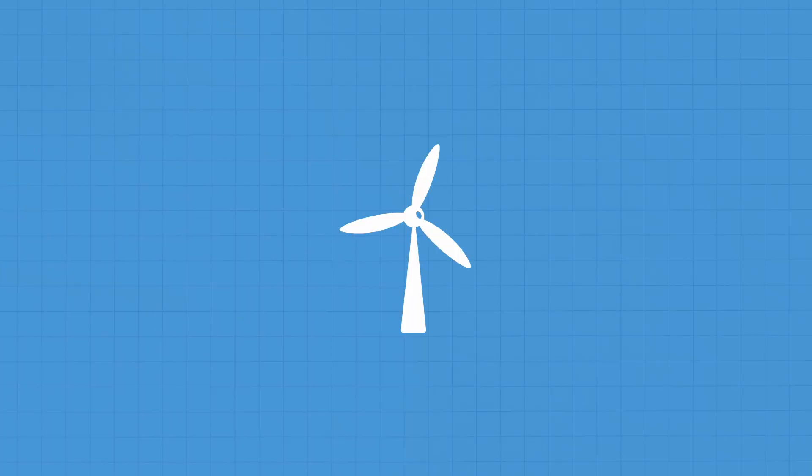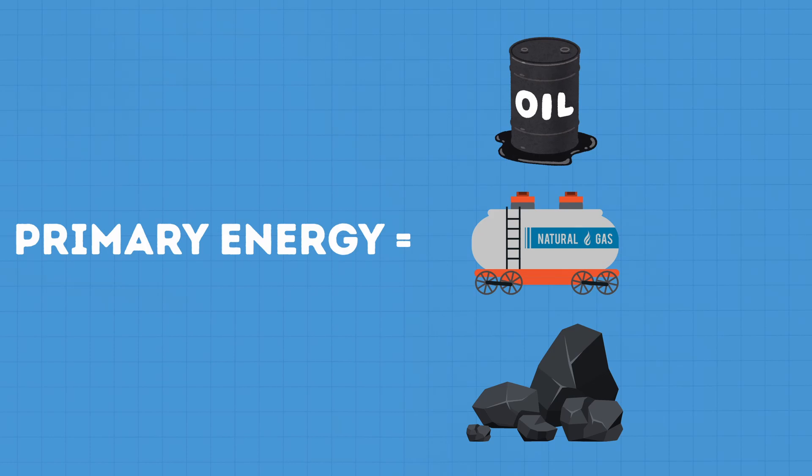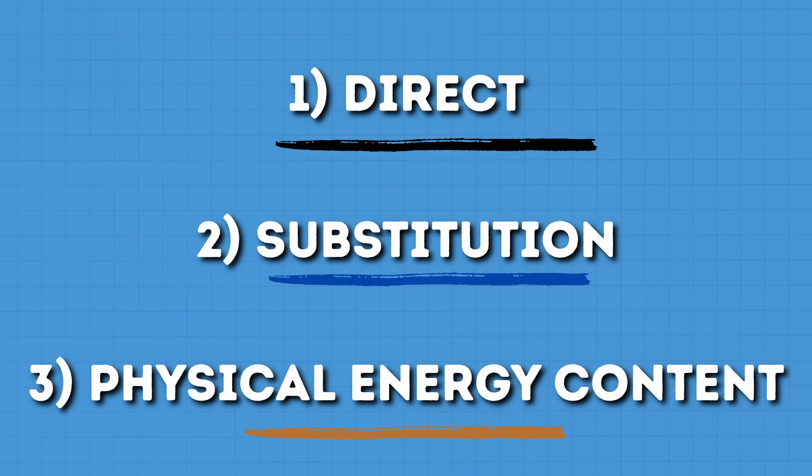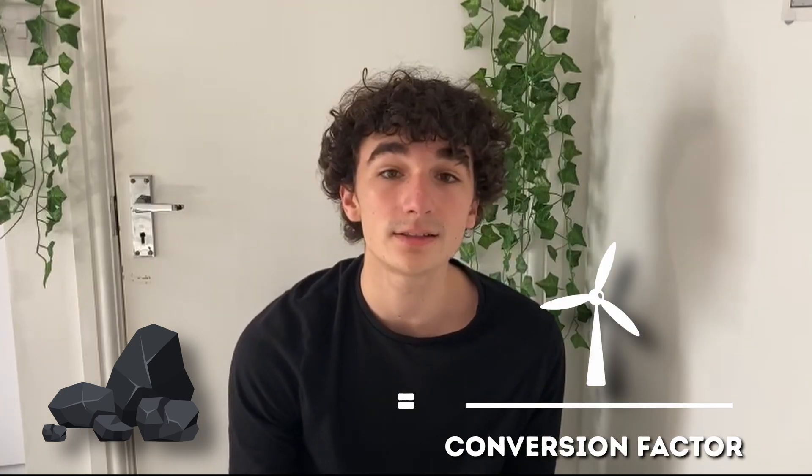But there is also another issue with primary energy, which brings us to the second part of this video: how primary energy is calculated. When renewables weren't really around, primary energy made more sense and it was easier to calculate, since you weren't comparing apples and oranges. Now, with renewables that don't generate waste heat, it's much harder. So let's cover the three main accounting methods that are used.